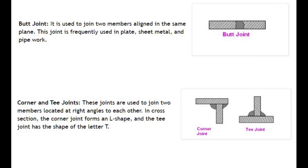Butt Joint: It is used to join two members aligned in the same plane. This joint is frequently used in plate, sheet metal, and pipe work.